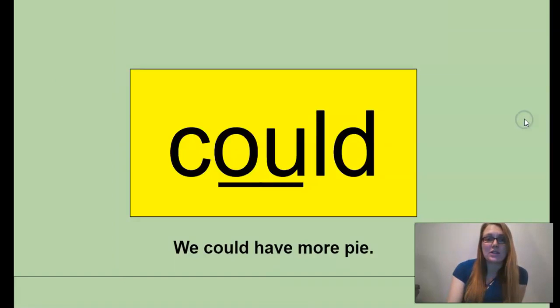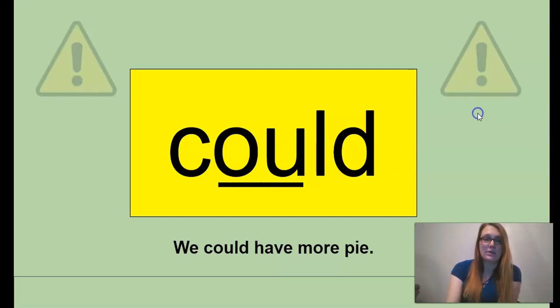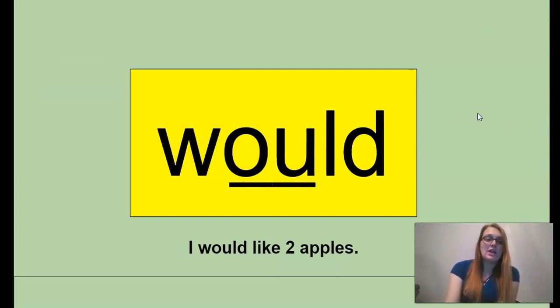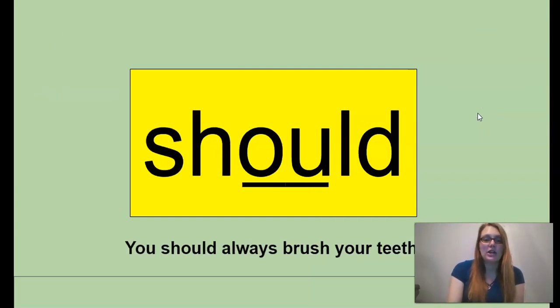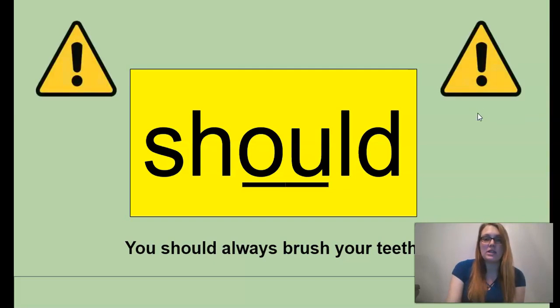Okay, our tricky words. Word number one, could. We could have more pie. The tricky part is the O-U because we're used to that saying ow, but it has an uh sound. Our next word, would. Just like could, the O-U has an uh sound. I would like two apples. And should. Once again, the O-U is the tricky part, making the uh sound. You should always brush your teeth.